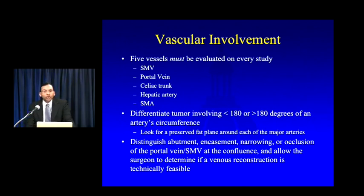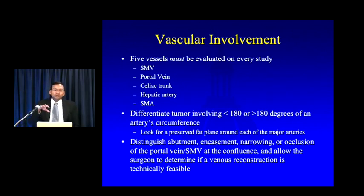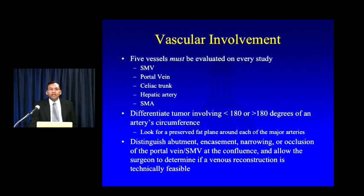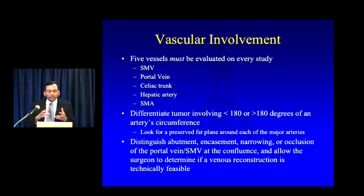For arterial involvement, report in terms of degrees — differentiating tumors with less than 180 degrees of artery circumference involvement from those with over 180 degrees. A preserved fat plane around the artery margins indicates vessel clearance. For portal vein and SMV involvement, use verbal descriptors rather than degree nomenclature, to help the surgeon determine whether venous reconstruction is technically feasible. Venous involvement is less of a barrier to surgical resection nowadays since surgeons can perform jump grafts and other reconstruction techniques.